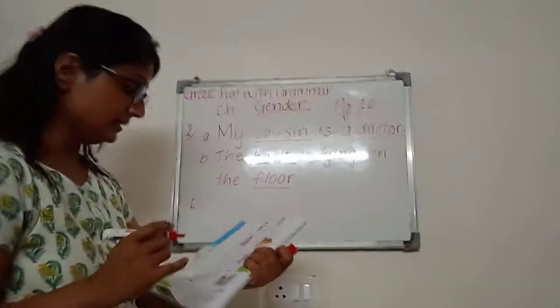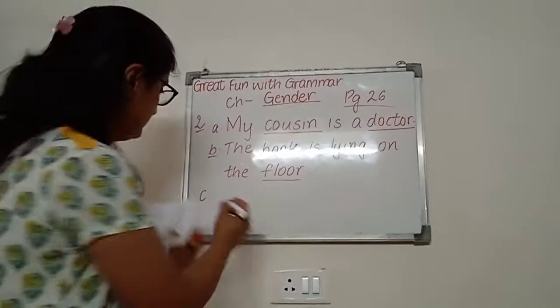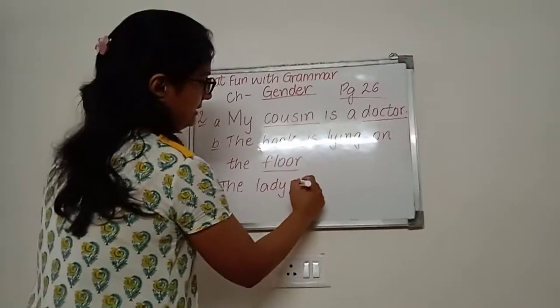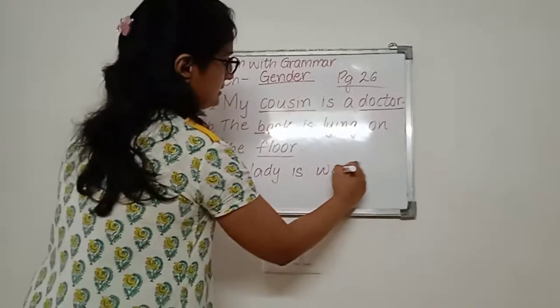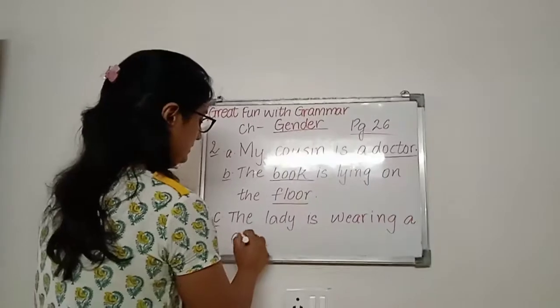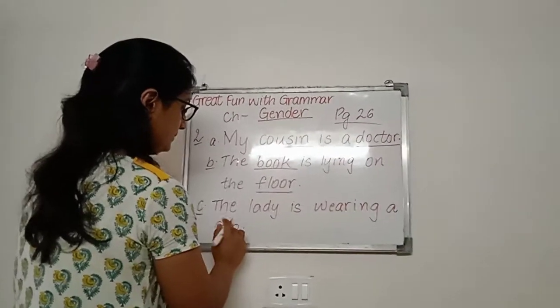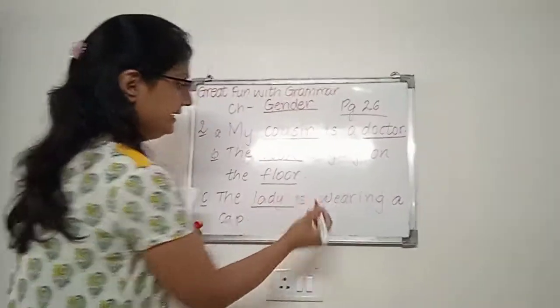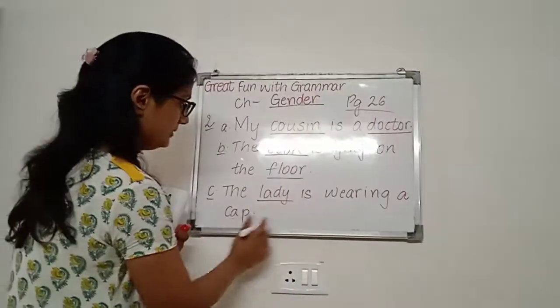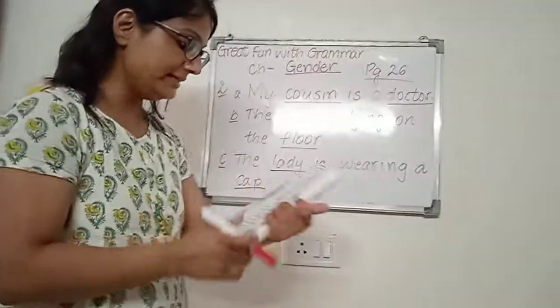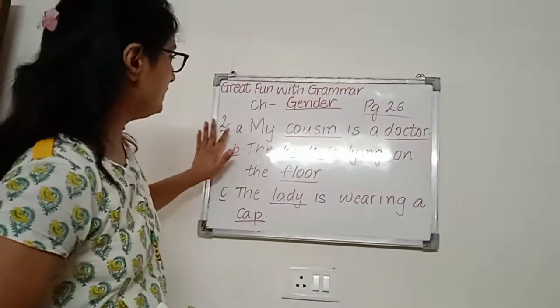Now, the C part. The lady is wearing a cap. The lady is wearing a cap. Now, what are the nouns in this sentence? Lady. Underline. Cap. Underline this. So, in this manner, ma'am has solved A, B, C.